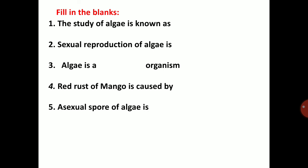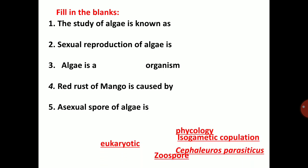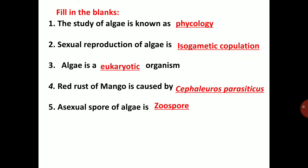Question and answers: The study of algae is known as algology or phycology. Sexual reproduction of algae is isogametic copulation. Algae are eukaryotic organisms. Red rust of mango is caused by Cephaleuros parasiticus. The asexual spore of algae is called a zoospore.